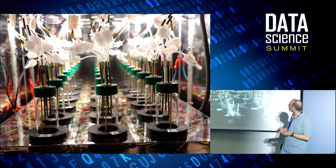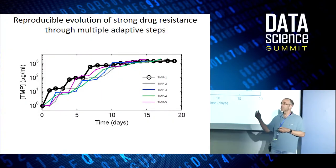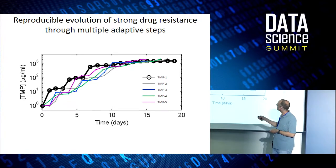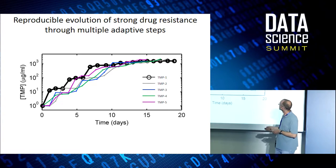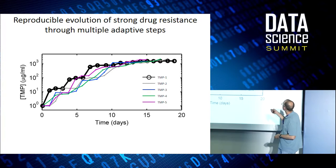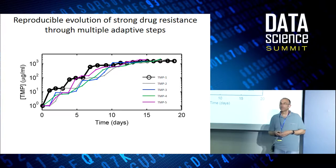Here's the device. When we put bacteria in it, we see a very dramatic increase in antibiotic resistance — some 1,000-fold in the concentration of drug needed to kill the bacteria — over two or three weeks of selection. You can see it happens through multiple steps. These are different replicates; they all reach about the same level fairly quickly.